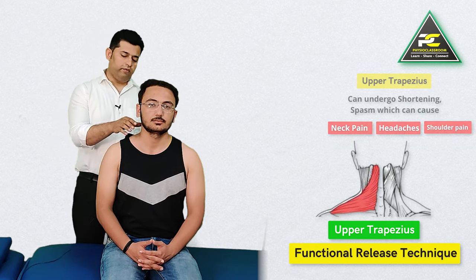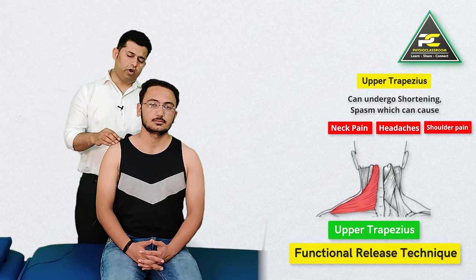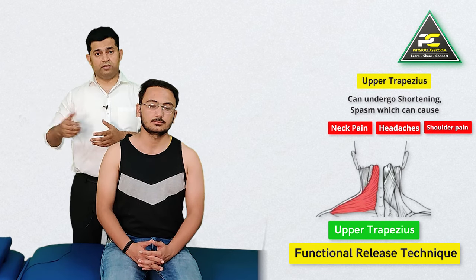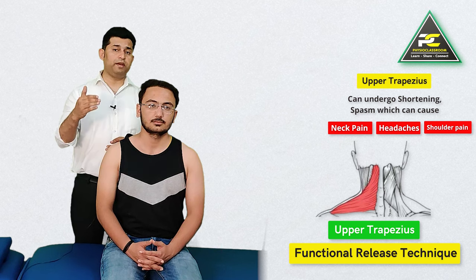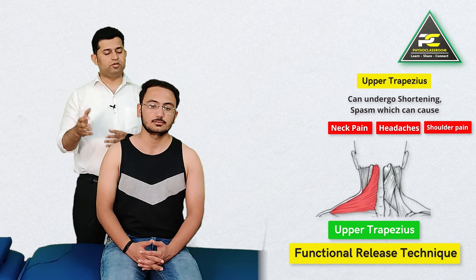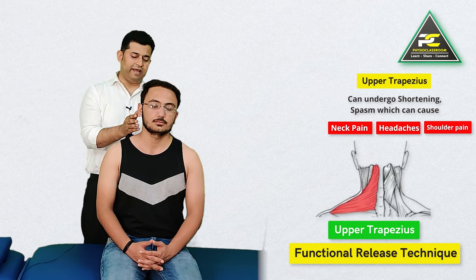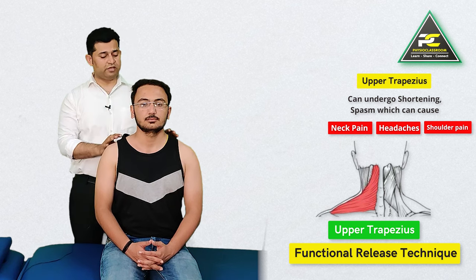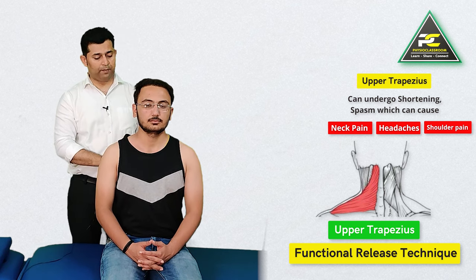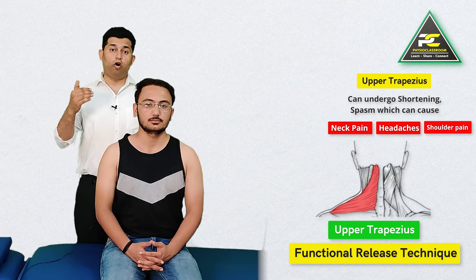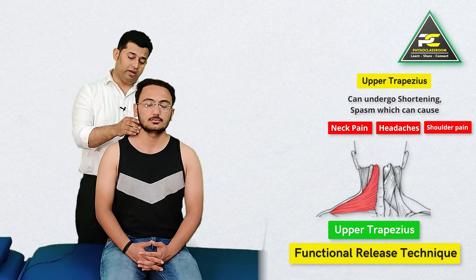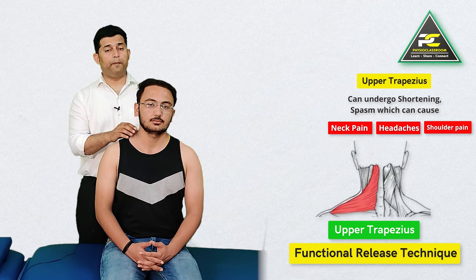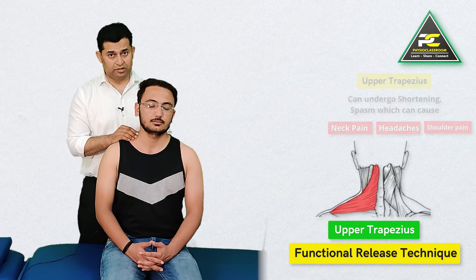It is a very common observation in clinical OPDs that many patients who come to us with complaints of headaches, neck pain, shoulder dysfunction, as well as upper back pain can often have a tight or spasmodic upper trapezius muscle.